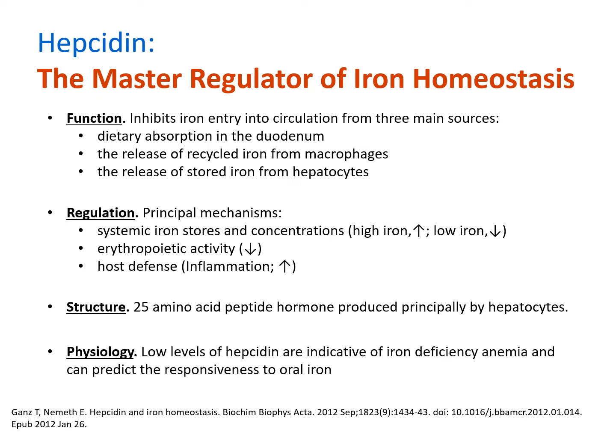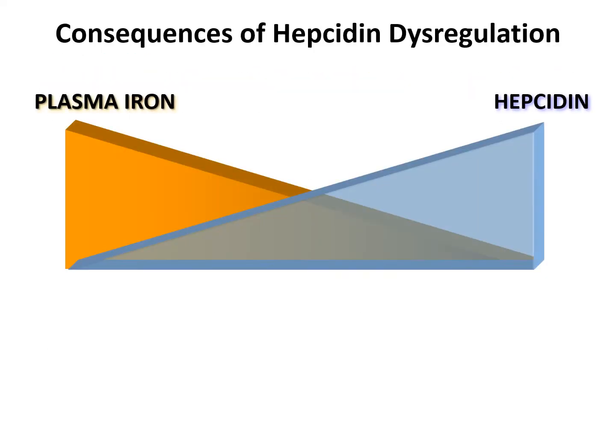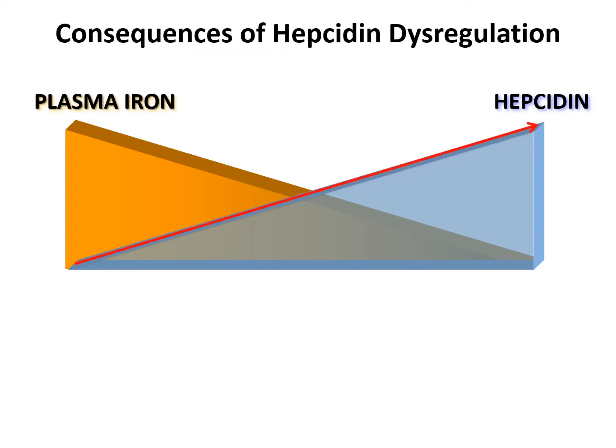The route of iron supplementation can be predicted by indicating a patient's responsiveness to oral iron. When hepcidin levels decrease, plasma iron levels increase. And when hepcidin levels increase, plasma iron levels decrease.